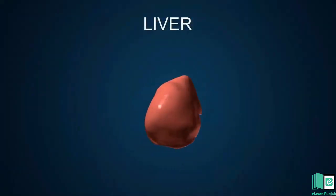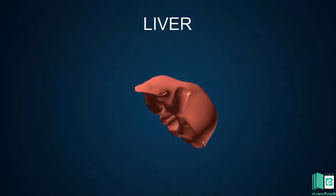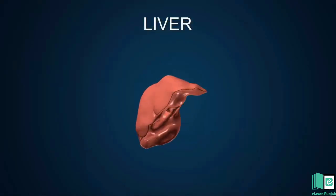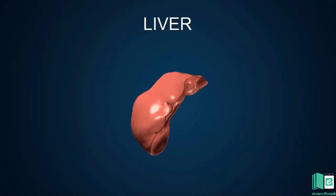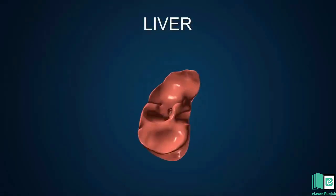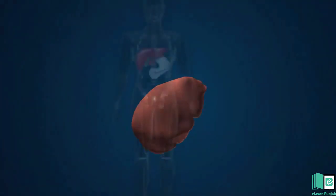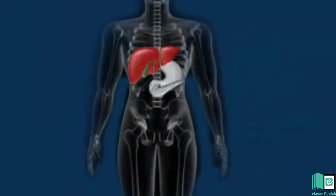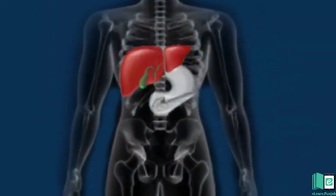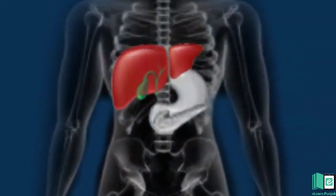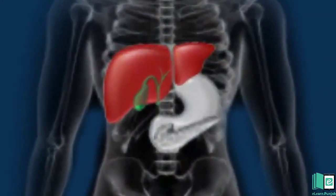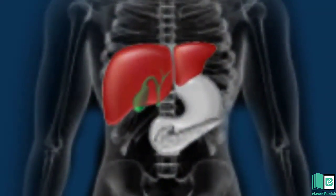The liver is the largest gland of the human body. It is situated above the stomach and its color is reddish brown. The liver produces bile to aid digestion. It also breaks down harmful substances in the blood.